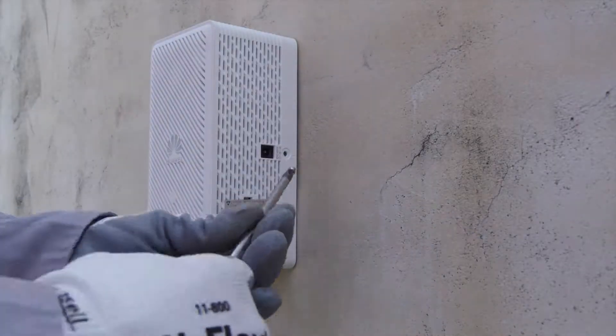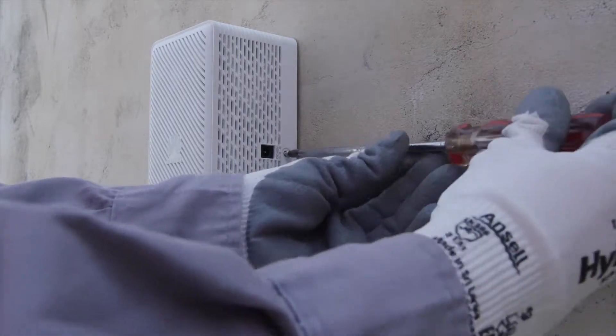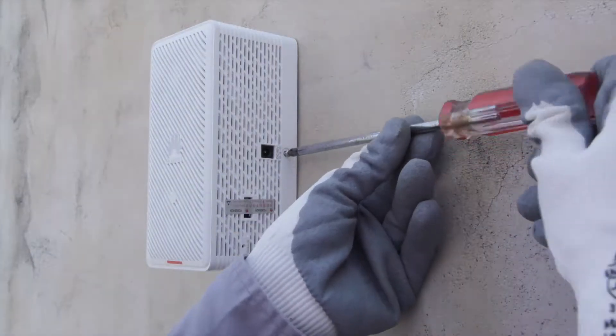Fasten the Phillips screw into the AP to prevent it from falling off. If the anti-theft function is required, use a Torx screw instead.